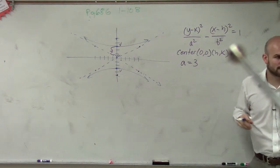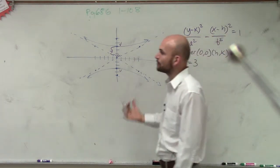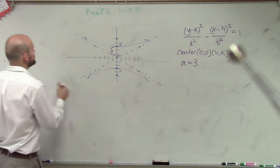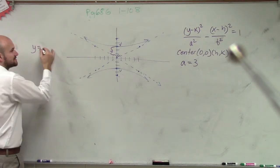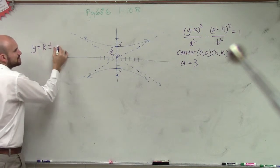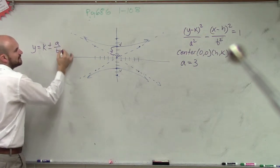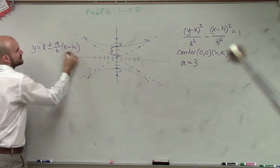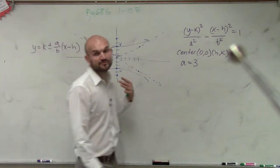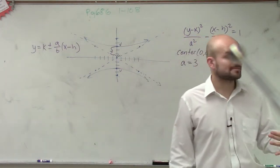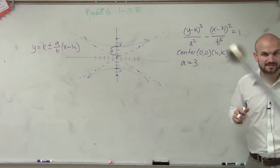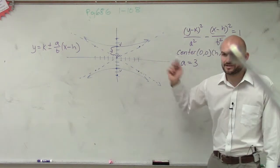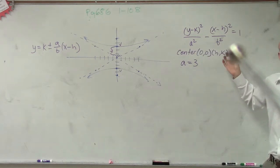For a hyperbola, remember, we have asymptotes. And the equation for asymptotes is y equals, for a vertical transverse axis, is k plus or minus a over b times (x - h). So that's the equation for your asymptotes for a vertical transverse axis. Now, do we know what h and k are in this problem so far? (0, 0), right?